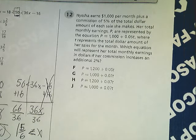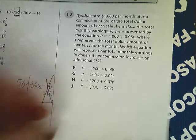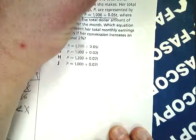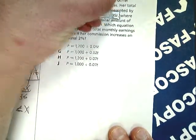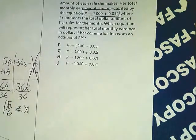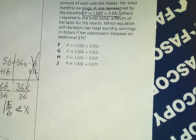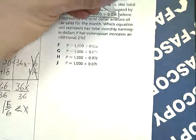Her monthly earnings are represented by the equation P equals. Any time you see an equation like this, you should make a note of it. I circle it, or you can bring it out, whatever you want to do. T represents the total dollar amount her sales for the month. So this is total dollar amount.